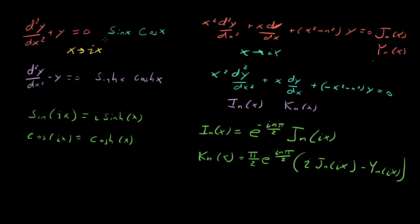In the trig case, we just took our first solution and our second solution, threw an i in there, and then called those our new solutions, sinh and cosh. In this case, we're doing that with our Bessel function of the first kind.